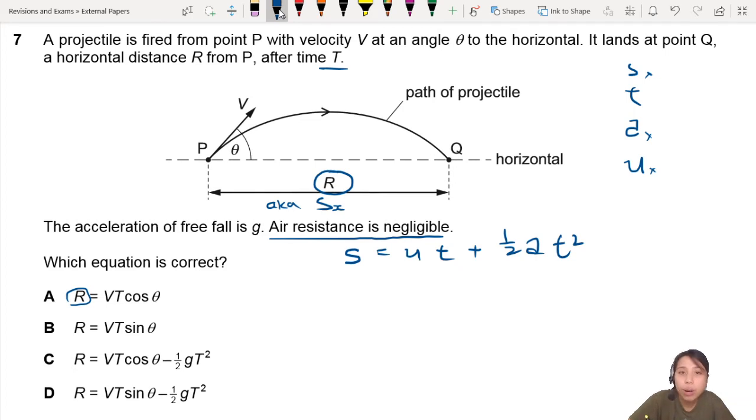But everything's in the horizontal. So, S of X, U of X, A of X, that will remind you that that's happening. So horizontally, there is no force acting on the particle horizontally. So there's no horizontal acceleration. So this whole part is pretty much gone.